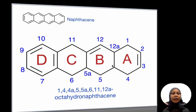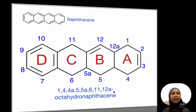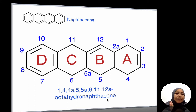The positions 12A, 4A, 5A, and so on are quite important — especially 12A, which is the most important in the chemistry of tetracycline. The hydrogens at positions 1, 4, 4A, 5, 5A, 6, 11, and 12A appear in the name as 'octa,' standing for hydrogen — octahydro naphthacene. That's the general nomenclature of tetracycline.